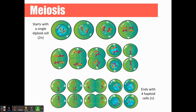Here's a full picture of what we just went through. In meiosis, we start with a single diploid cell. At the end of meiosis one, we have two cells. At the end of meiosis two, we have four cells — so the process of meiosis ends with four cells. Notice these are haploid cells, meaning they have half the number of chromosomes that the original parent cell had.